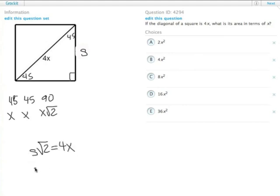We're trying to isolate what the value of s is, so we divide both sides by the square root of 2. s equals 4x over the square root of 2.